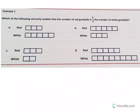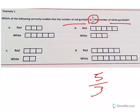Alright, example one, which of the following correctly models that the number of red gumballs is five-thirds the number of white gumballs? Well, it looks like five-thirds, that's a fraction. What about the ratio? It works the same way.